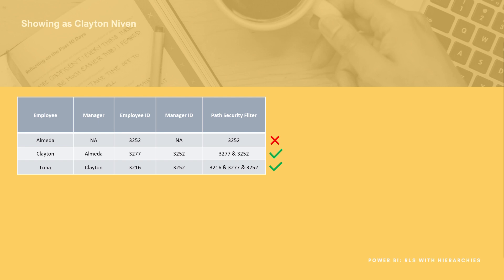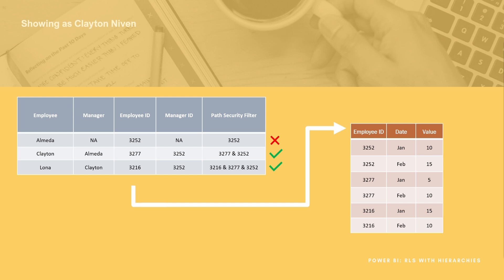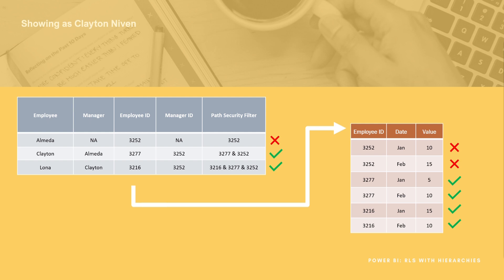Let's take this example a step further. If we pretend to be Clayton for a moment we can see the two rows of data. When we link this table to another table of data using the employee ID, the security will propagate from the table which we've applied the security on through to the table we haven't. So in this example Clayton will not be able to see the first two rows because they are related to Almeda's employee ID, but will be able to see the following four which are related to either his own or Lona's.